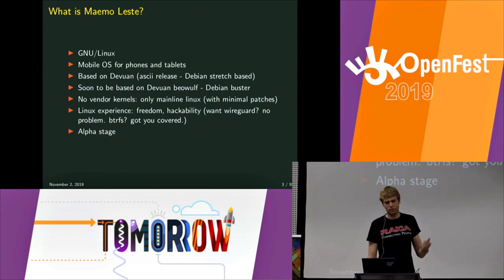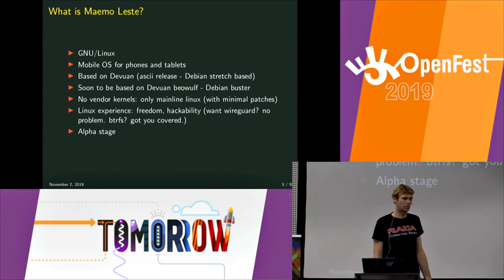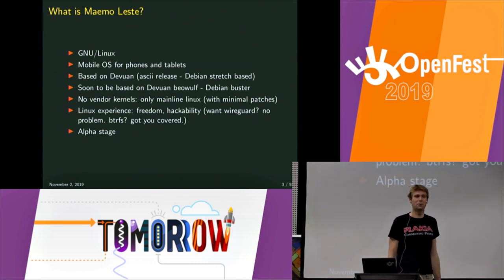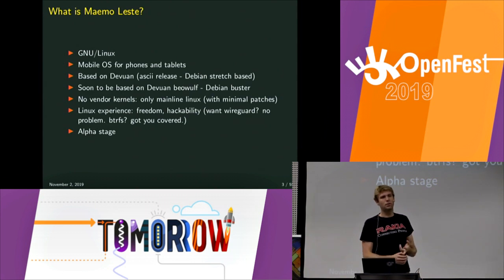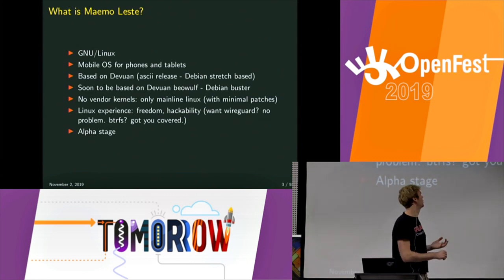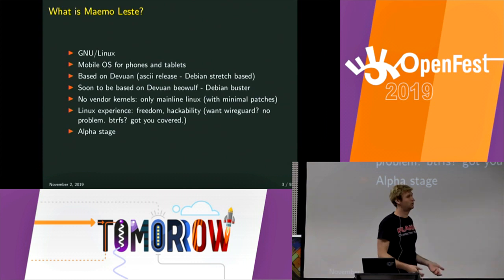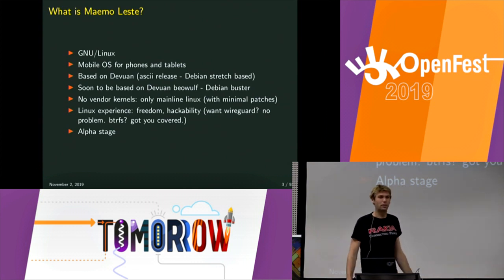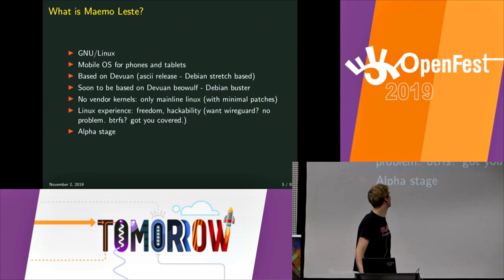One thing we really care about is that everything that runs on a device running Maemo Leste has to be mainline Linux — directly from upstream from the developers that work on Linux, not from a company that releases one version and then doesn't do anything with it for five years. Most Android phones run Linux 3.4, 3.18, or 4.4, and they just never get a newer version. We also really care about the Linux experience, so you can hack around as much as you want, install WireGuard, use Btrfs, whatever. It's currently in alpha stage — last year we were pre-alpha.